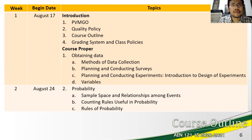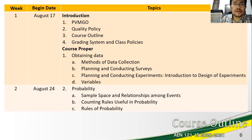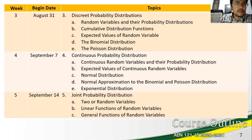In obtaining data, we will discuss methods of data collection from surveys to experiments, and also cover variables. For the concept of probability, we will expand from the basic idea of a sample space, events, and the relationships of these events, to counting rules and rules of probability. All these are significant concepts in probability distributions, which is the foundation of a sound experimental design. The probability distributions to be discussed include discrete, continuous, and joint probability distributions.